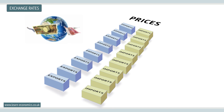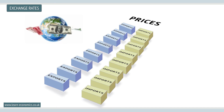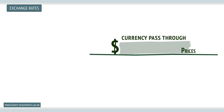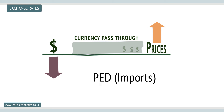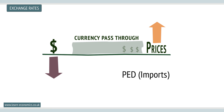Initially, movements in currencies affect import and export prices. The extent of this depends on what is called currency pass-through, which is the effect of a currency change on specific prices. These can differ widely from industry to industry. Assuming some pass-through, exchange rates affect the demand for imports and exports, the full effect depending on the elasticity of demand for imports and exports.